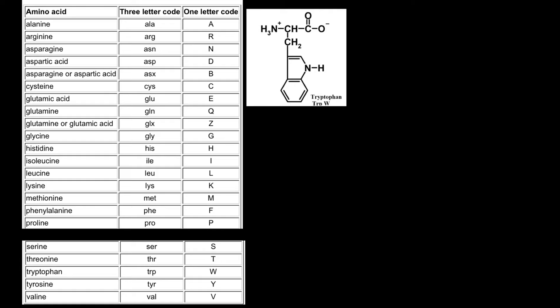Just remember that tryptophan consists of two words, so its three-letter abbreviation is not going to be the first three letters. The same is true for isoleucine, which also consists of two words. Two more amino acids with non-standard abbreviations are asparagine — the amide of aspartic acid — whose abbreviation is ASN, not ASP; and glutamine — the amide of glutamic acid — whose abbreviation is GLN, not GLU.